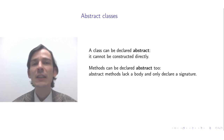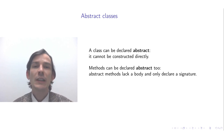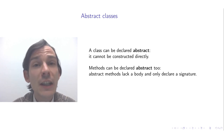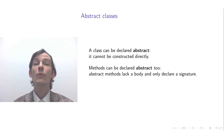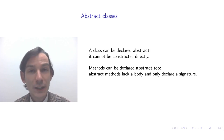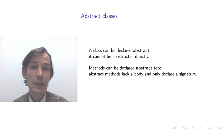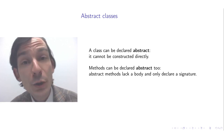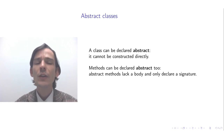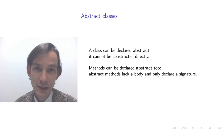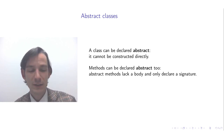Furthermore, abstract classes also allow the declaration of abstract methods. Abstract classes may have non-abstract concrete methods, but since they cannot be instantiated, it is also possible to declare methods abstract, which necessitates any non-abstract subclasses to implement or overwrite that abstract method. Abstract methods don't have a body because they're never directly called, but it is important that the signature is clear, because that is what is overridden in subclasses.